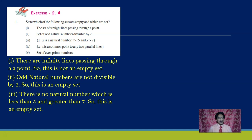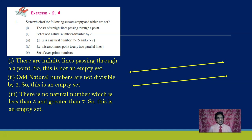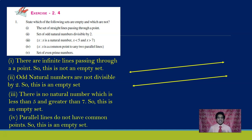Now look at the next one: the set of x such that x is a common point to any two parallel lines. Parallel lines do not have common points. If two straight lines have a common point, they are called intersecting lines. Since parallel lines have no common points, this set is an empty set.